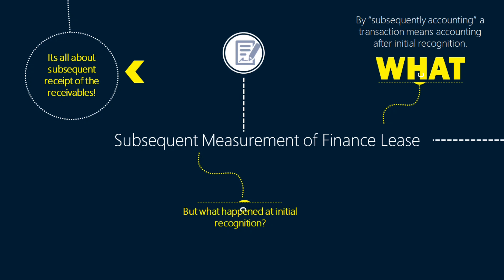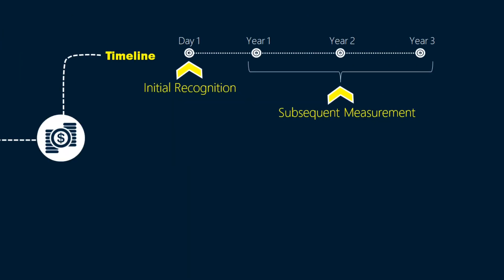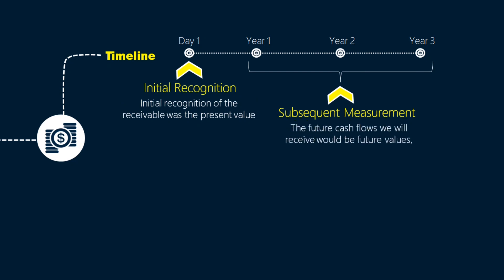But there is a problem. The future cash flows we receive would be future values, in contrast to the initial recognition of the receivable which is the present value. So what do we do with the difference between the future and the present values? It would be considered finance income of the lessor in accordance with IFRS 16.